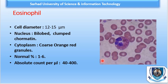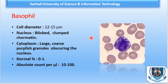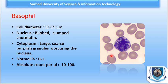The basophil is 10 to 15 microns, bilobed with very clumped chromatin, and has large coarse granules that are purplish in color, often obscuring the nucleus — so we cannot see the nucleus prominently. Normally it is 0 to 1 percent on the peripheral smear, with an absolute count of 10 to 100 per microlitre.